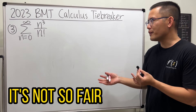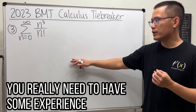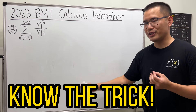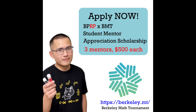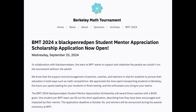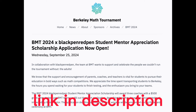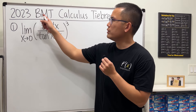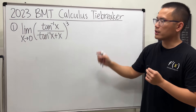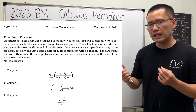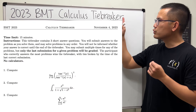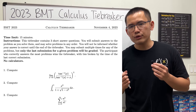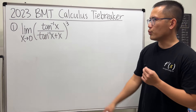What I'm about to show you, it's not so fair. You really need to have some experience in order to know the trick. Let's do the 2023 Berkeley Math Tournament, the calculus tiebreaker. We have three questions and the time limit for this is 15 minutes. But during the actual tiebreaker, you also have to compete with others in terms of time. So let's get to work.